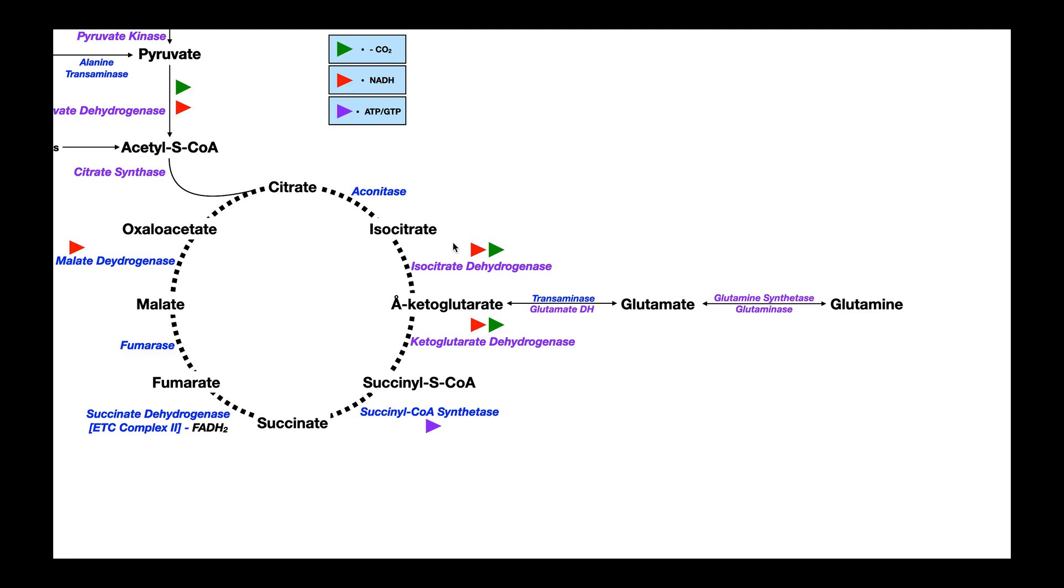Just a review of something we talked about in the previous video. Remember one of our anaplerotic reactions was we could take alpha-ketoglutarate right here and convert that into glutamate. This is done through the action of glutamate dehydrogenase. We can also convert glutamate back to alpha-ketoglutarate through the action of an aminotransferase, also called a transaminase.